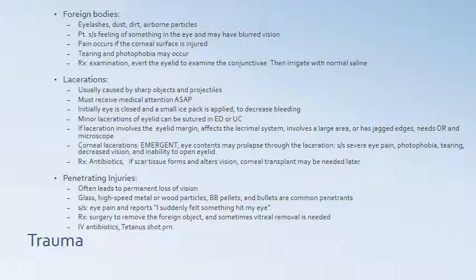Penetrating injuries often lead to permanent loss of vision. Common penetrants include glass, high-speed metal or wood particles, BB pellets, and bullets — think of people using chainsaws or table saws. Signs and symptoms include eye pain and the patient reporting they suddenly felt something hit the eye. Treatment is surgery to remove the foreign object; sometimes vitreous removal is needed. IV antibiotics and a tetanus shot are given as needed.